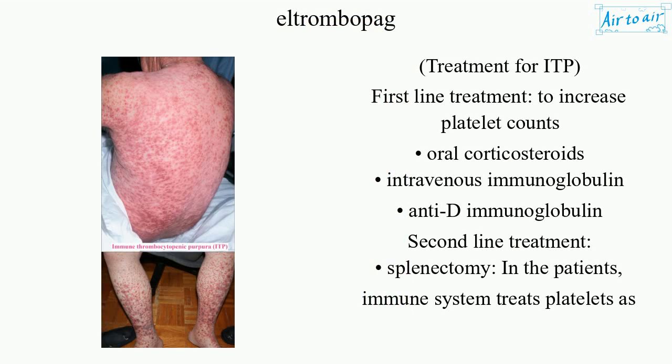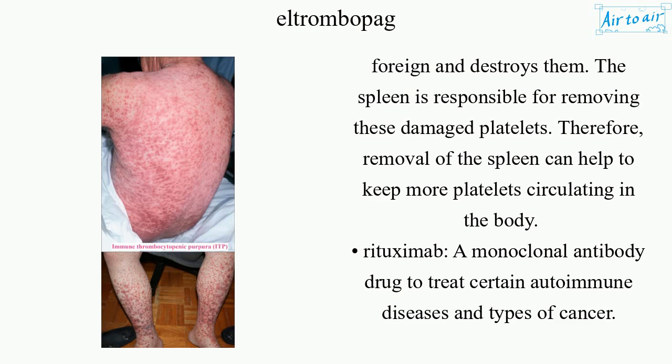Treatment for ITP — first-line treatment to increase platelet counts includes oral corticosteroids and intravenous immunoglobulin. Second-line treatment includes splenectomy, as the immune system treats platelets as foreign and destroys them; the spleen is responsible for removing these damaged platelets, so removal of the spleen can help to keep more platelets circulating in the body.